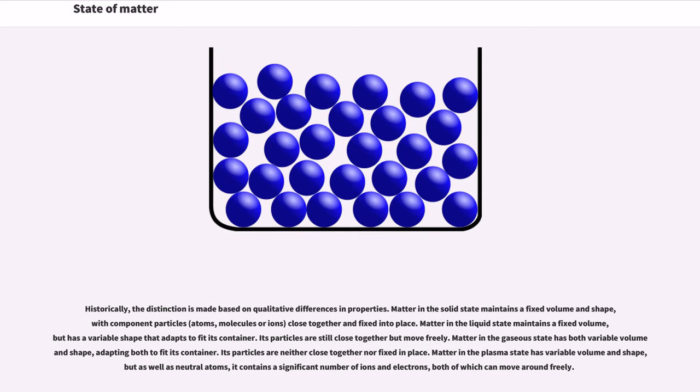Historically, the distinction is made based on qualitative differences in properties. Matter in the solid state maintains a fixed volume and shape, with component particles - atoms, molecules or ions - close together and fixed into place.